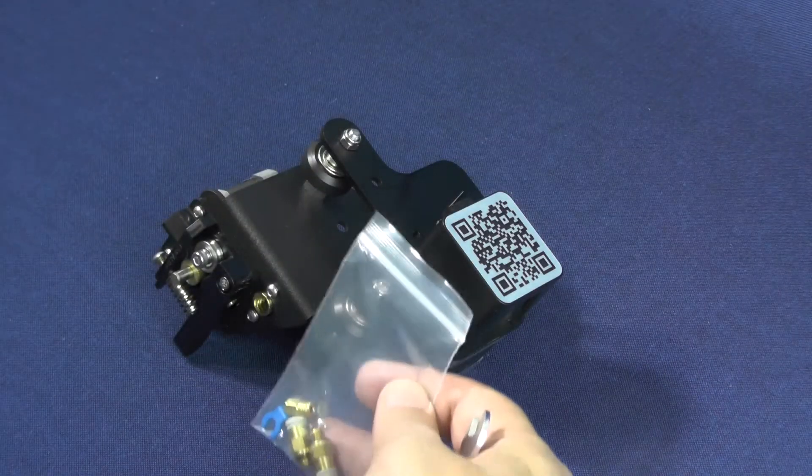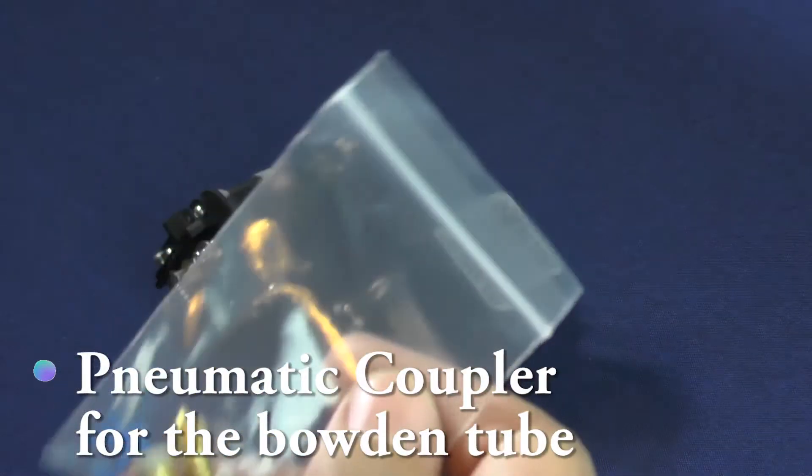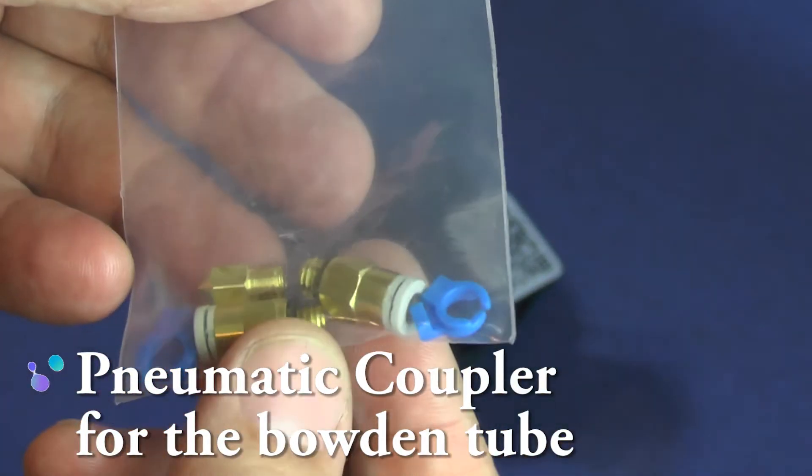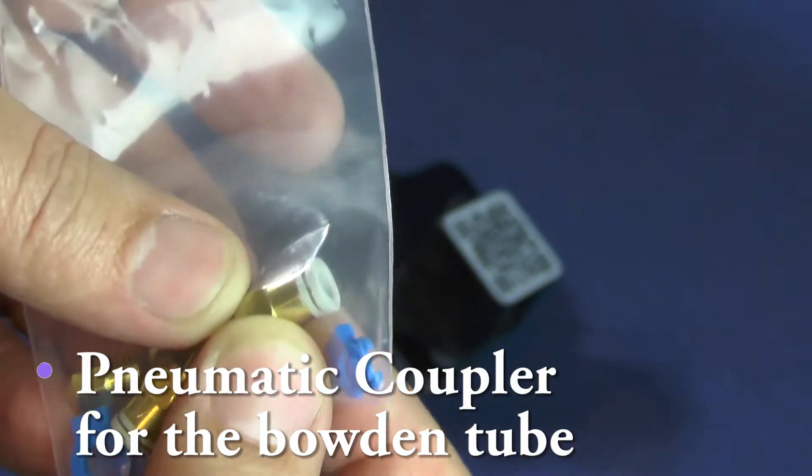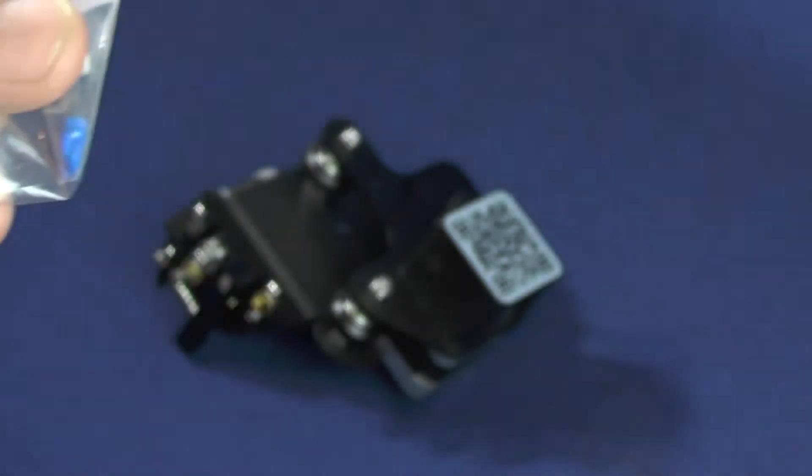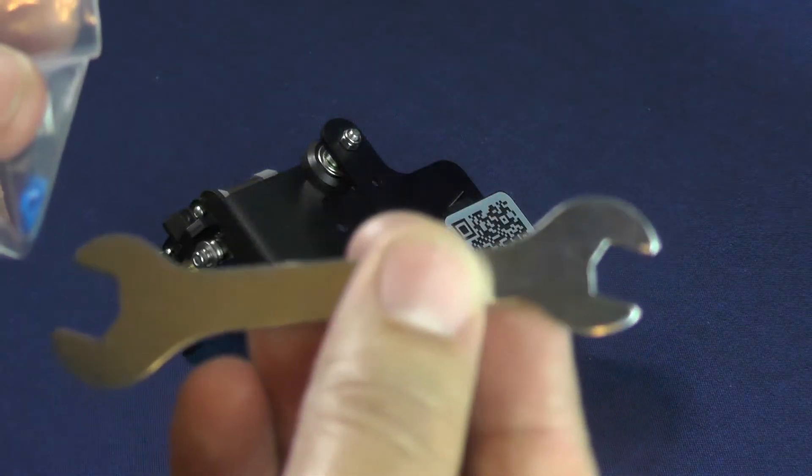But, before getting to that, we are going to take the opportunity to connect the pneumatic coupler for the bowden tube. And, to accomplish this task, we will need this open-end wrench that came with the printer.